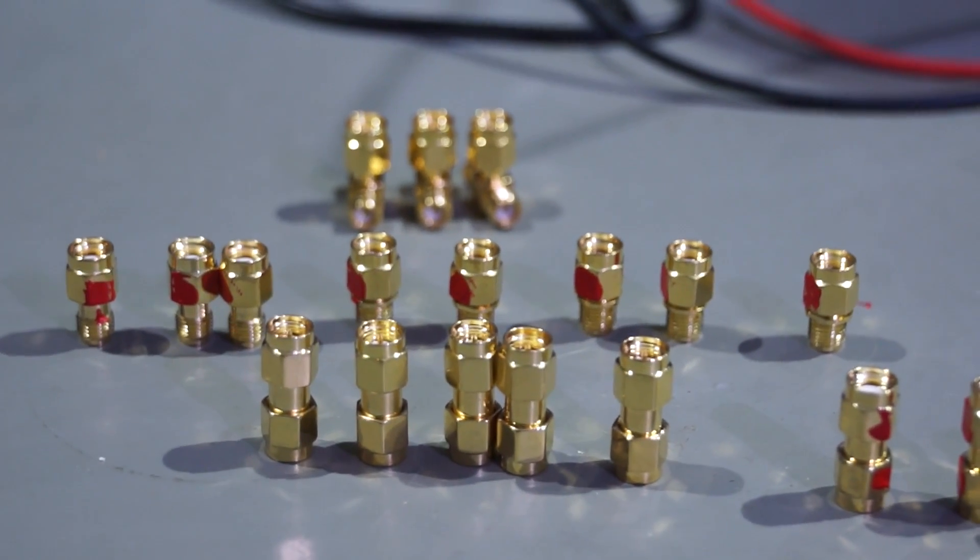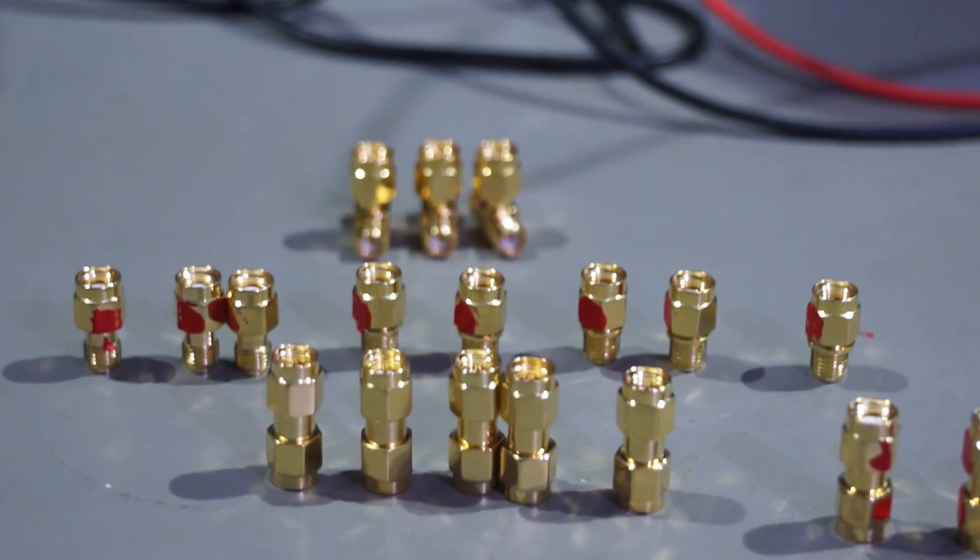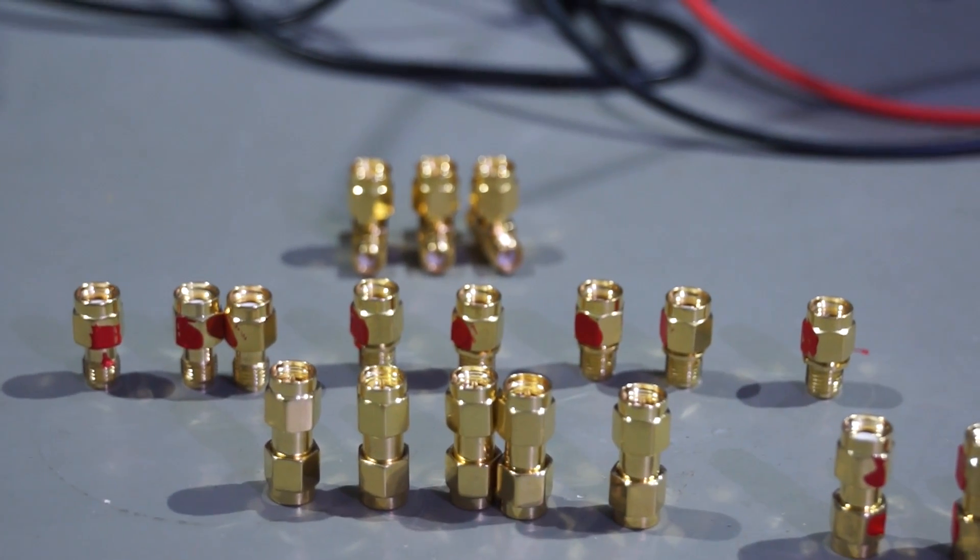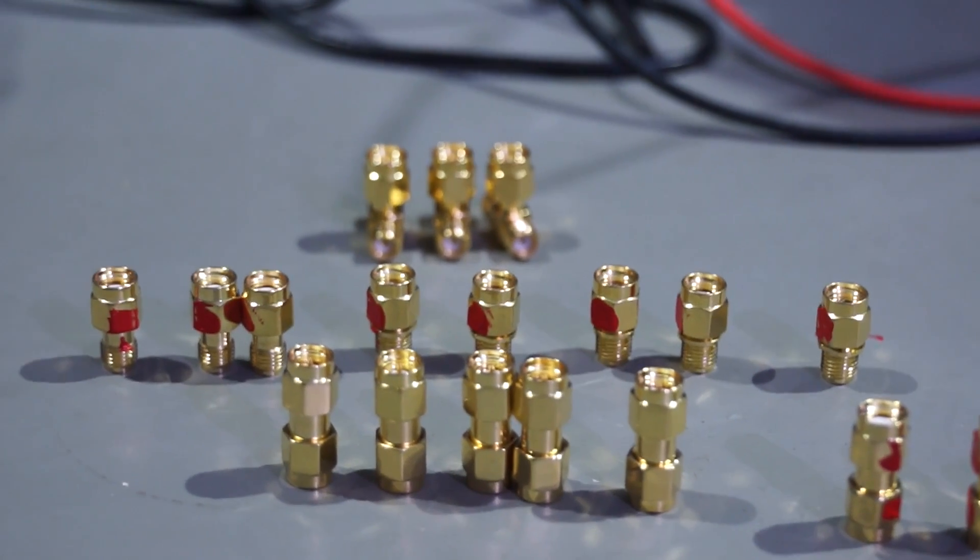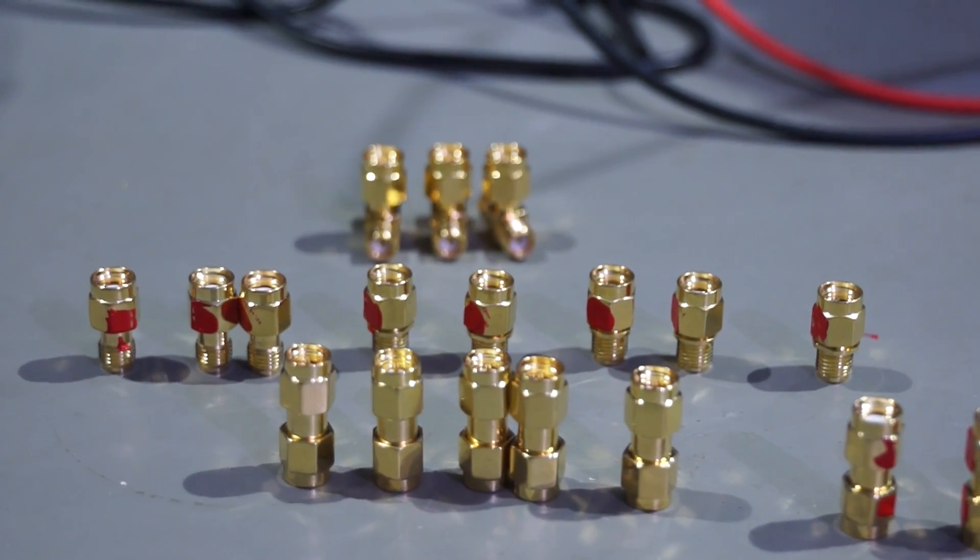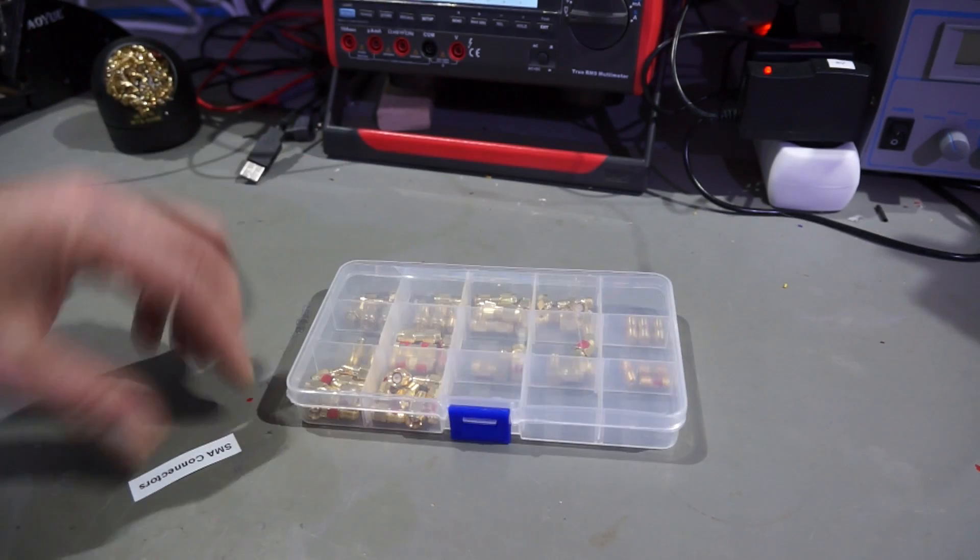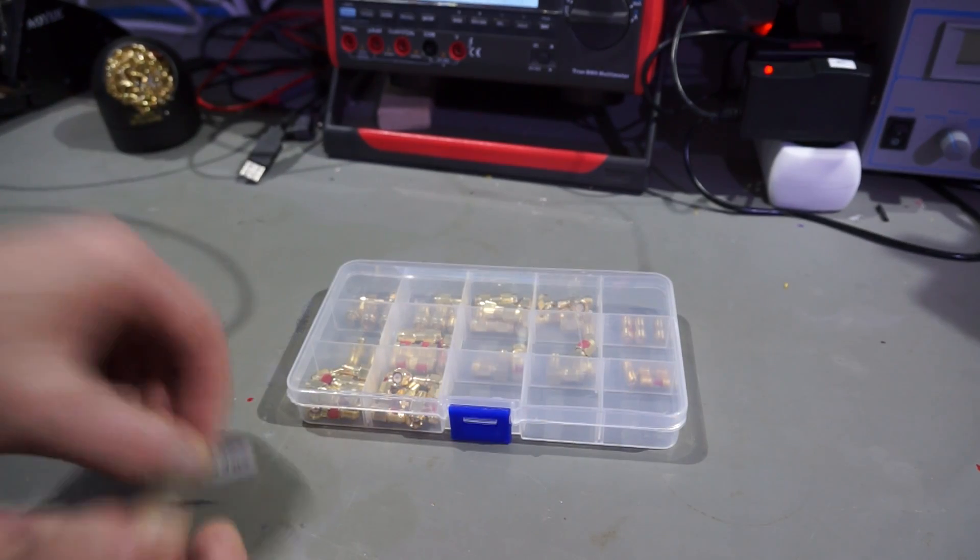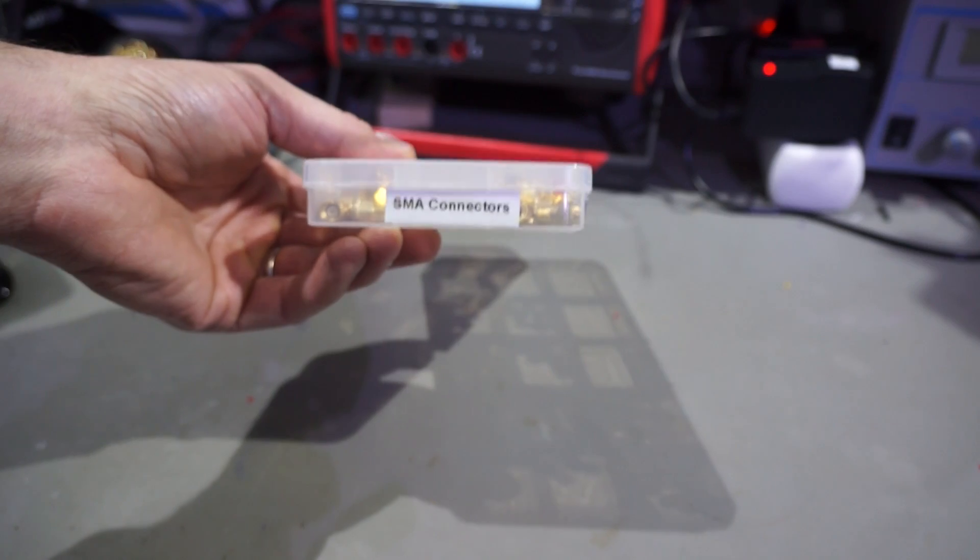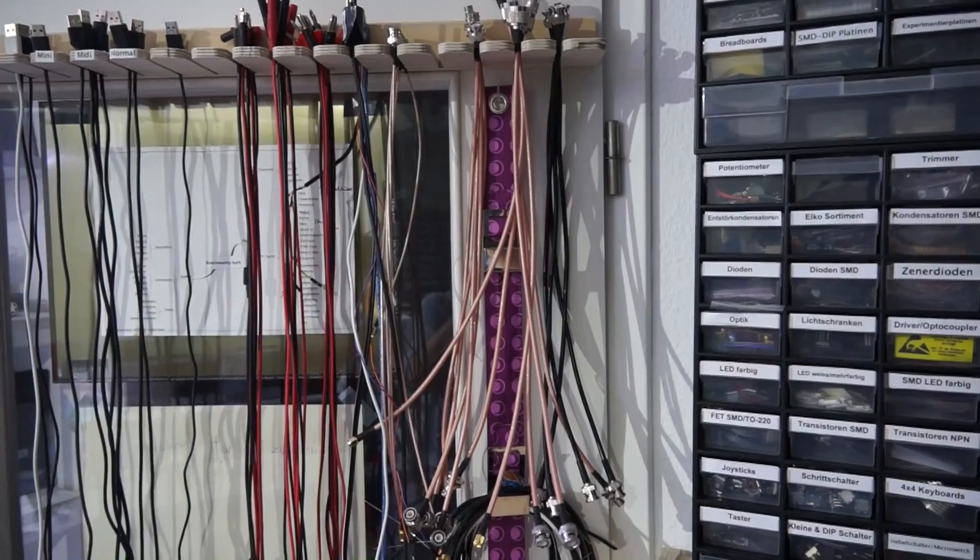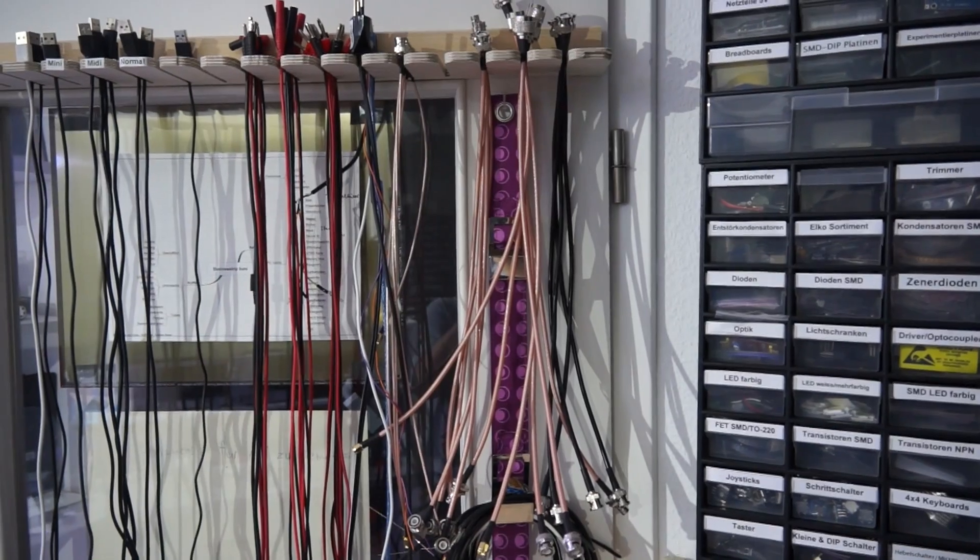Do you see the difference now? All the RP connectors are red so I will see them immediately that they are the reverse polarity. Now the SMA connectors are nicely packed and nicely labeled and in addition you need some pigtails to connect all the things together.